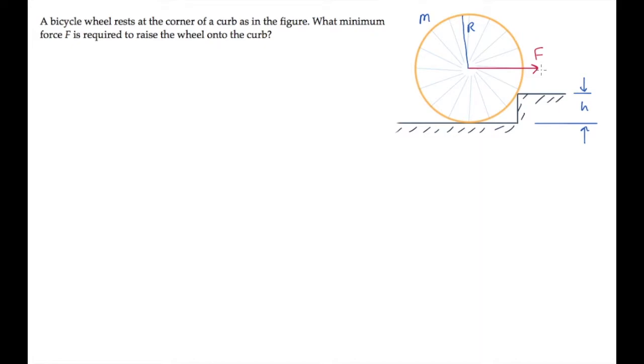Before we start solving it, it's useful to look at some of the geometry and dimensions. First, this distance shown in green, the distance between the horizontal line running through the center and the top of the curb, I'll call distance D sub H, and it equals capital R, the wheel's radius, minus H, the height of the curb.